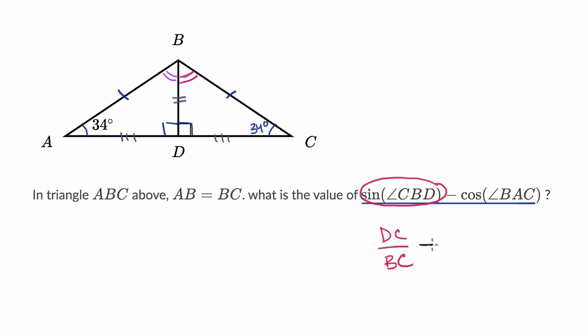And then we are going to subtract cosine of angle BAC. BAC is this angle right over here. Cosine is adjacent over hypotenuse. If what I'm saying is unfamiliar, I encourage you to review the right triangle trigonometry. And if the things I did about segment congruence and congruent triangles and similar triangles are unfamiliar, I encourage you to review that on Khan Academy. But cosine of angle BAC, that's adjacent over hypotenuse. Adjacent is AD, and then hypotenuse is AB.